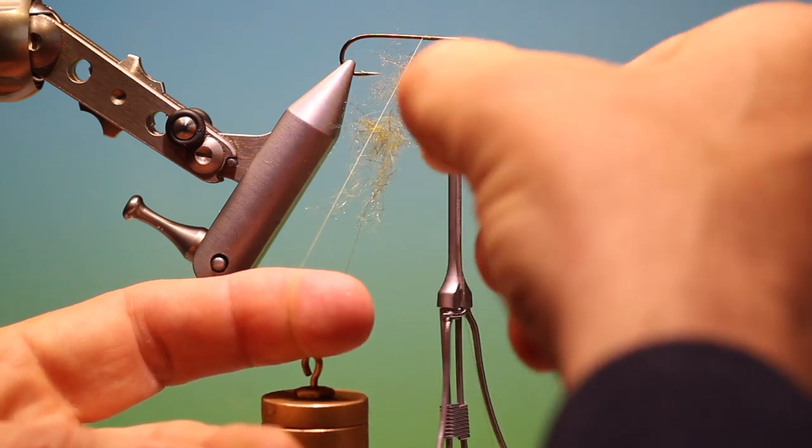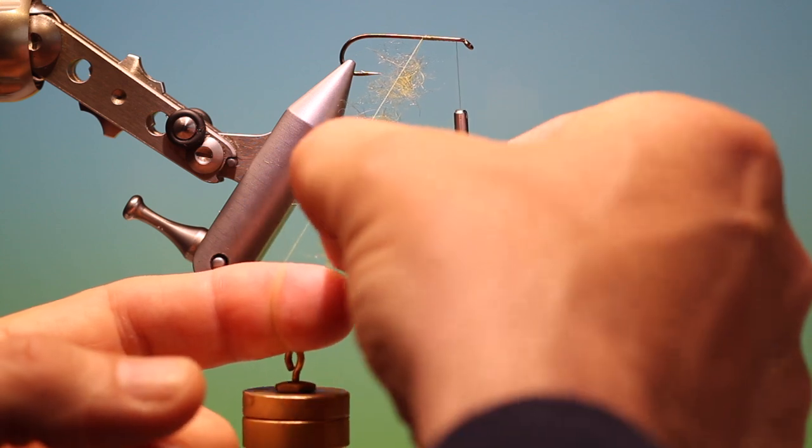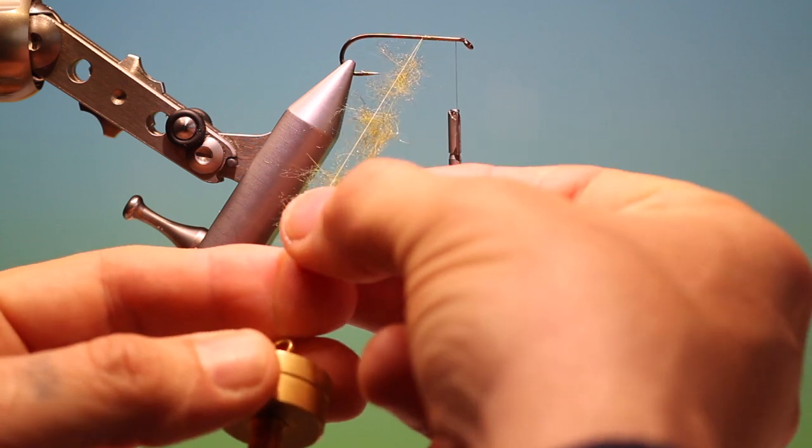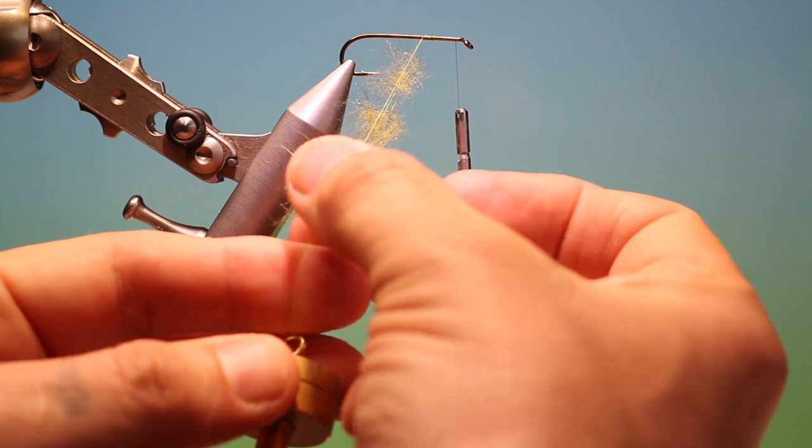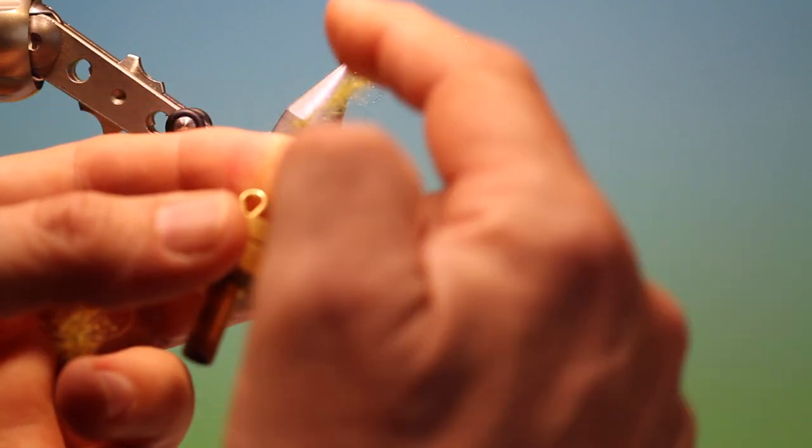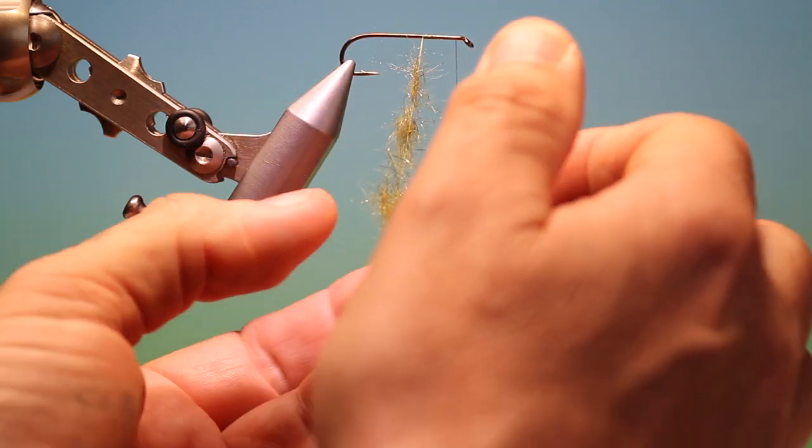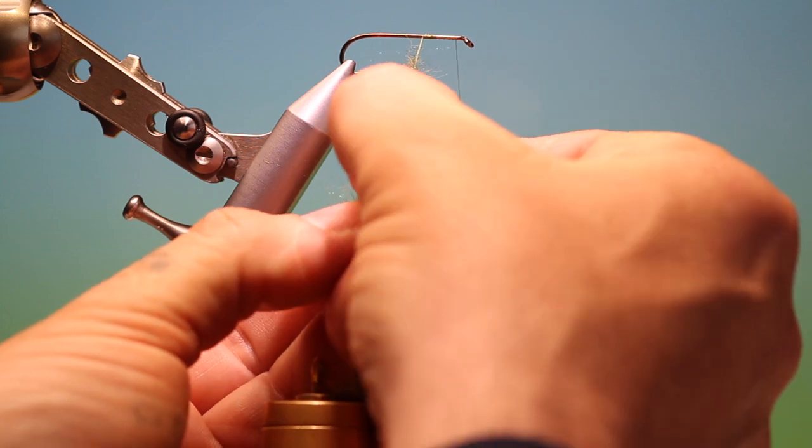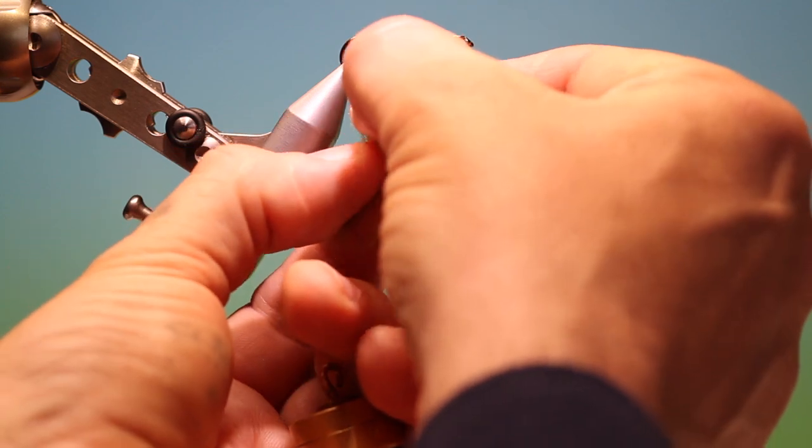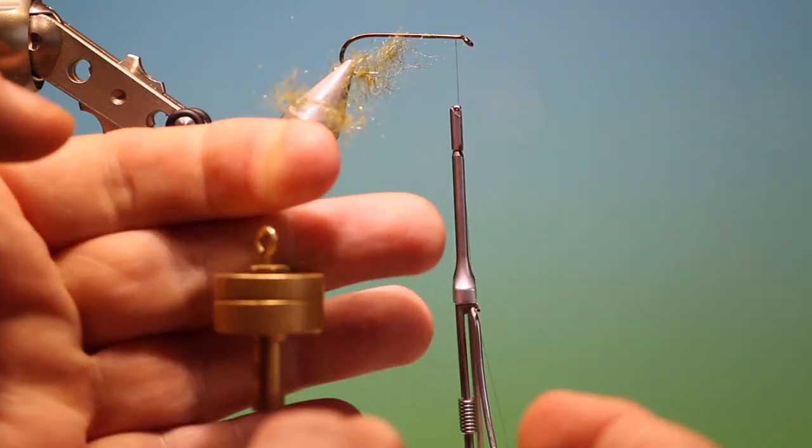We place this in, and you can use any kind of natural, synthetic, or a mixture. Once you've got enough in, hold the dubbing in place and remove your finger so the loop is closed. Then you can take your dubbing—as long as you keep the loop closed it's not going to fall out—and distribute it how you wish.